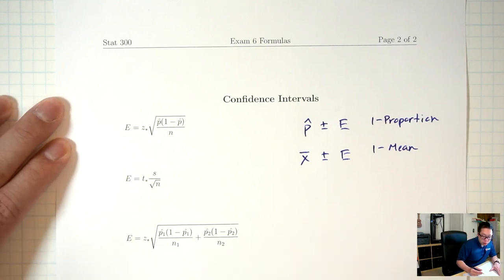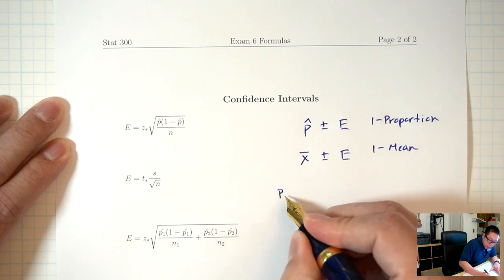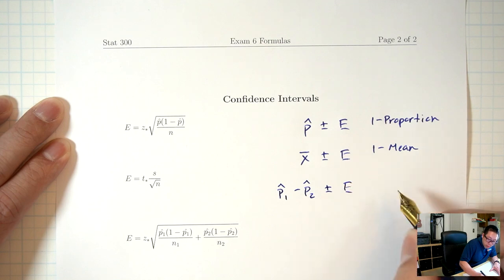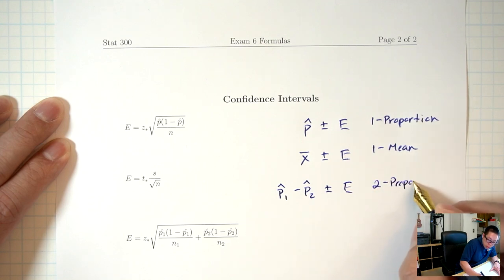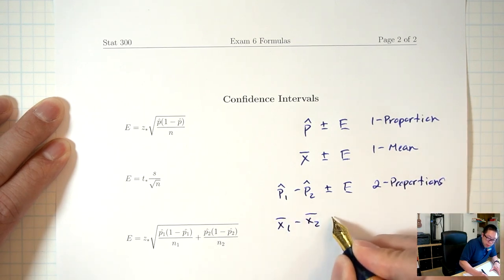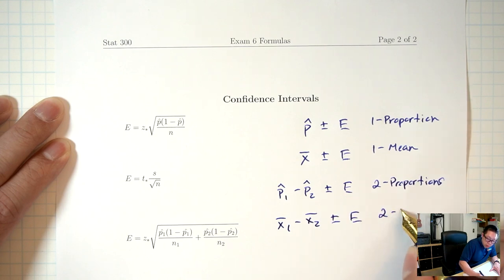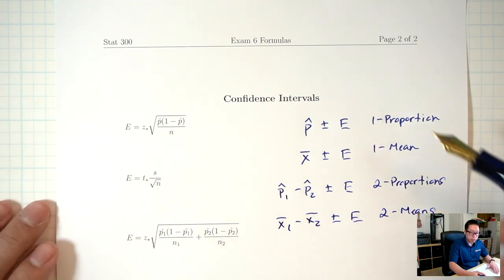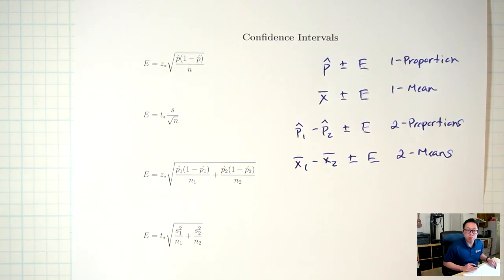For the two-proportion situation, the end product is going to look like p1-hat minus p2-hat plus or minus the margin of error. For two means, it's going to be x1-bar minus x2-bar plus or minus the margin of error. The question is how do you find the margin of error — it's different in each situation. In general, z-stars are for proportions and t-stars are for means.